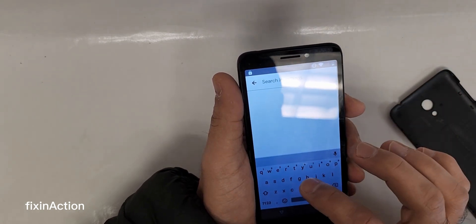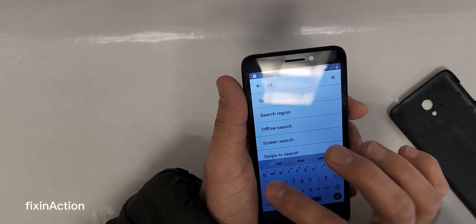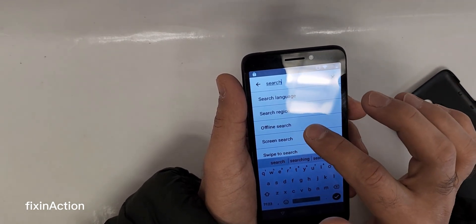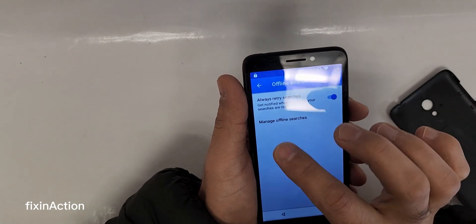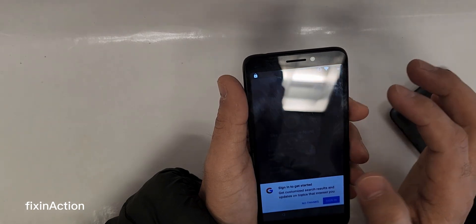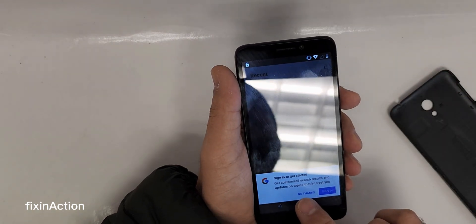Once you are in Vice Match, type here, let's type here, search. Here is Offline Search, tap on that. Manage Offline Searches. It will open up Google Assistant, so tap on No Thanks.